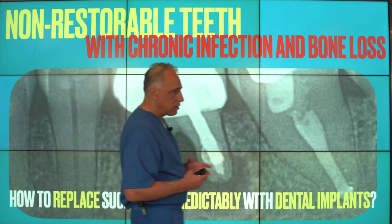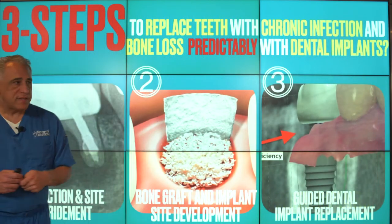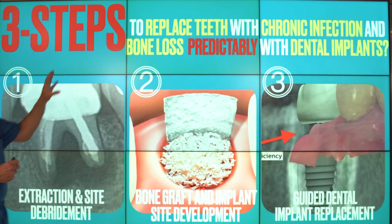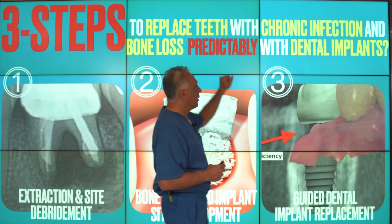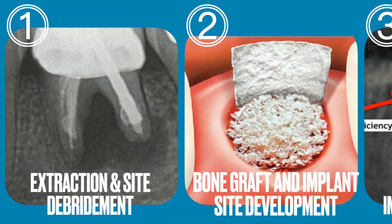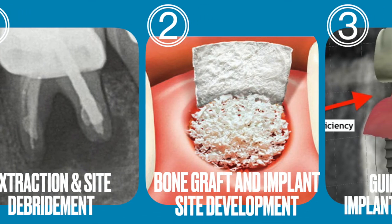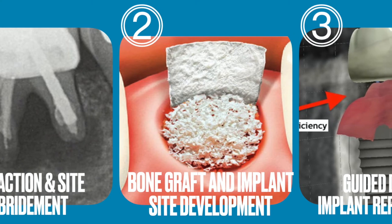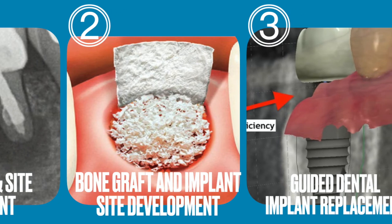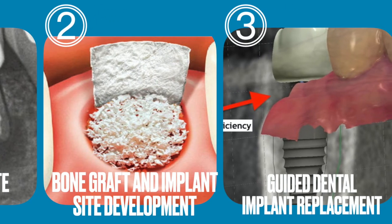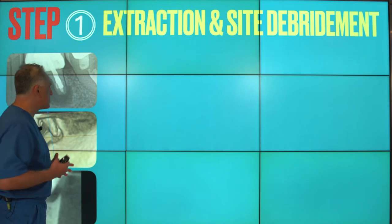So how do we predictably replace such teeth with dental implants? There is a three-step process for replacing teeth with chronic infection and bone loss predictably with dental implants. The first step is removal and extraction of the tooth and cleaning the area thoroughly. The second step is bone grafting the defect to develop the site for the future implant. And the third step is placement of a dental implant using a guided approach with our digital workflow. Let's take a look at each one of these steps.